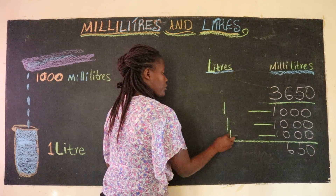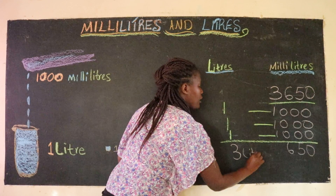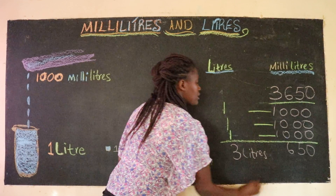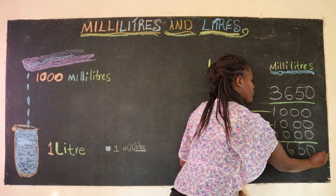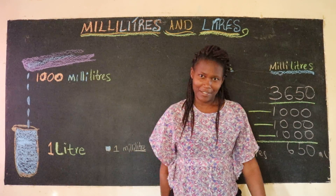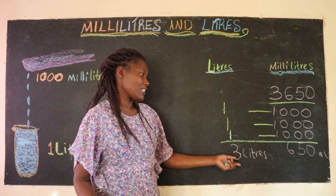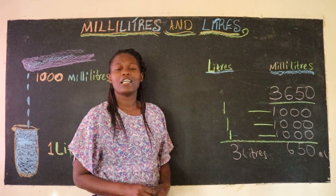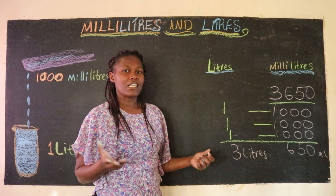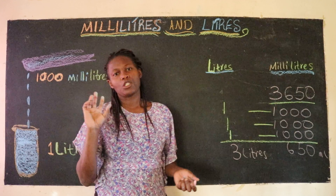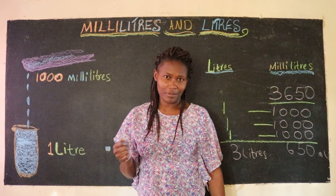So we have one, two, three — we have three liters and six hundred and fifty milliliters. That's how it is done, as easy as that. So try more of this and see how good you become. Goodbye for now, till we meet during the next lesson.